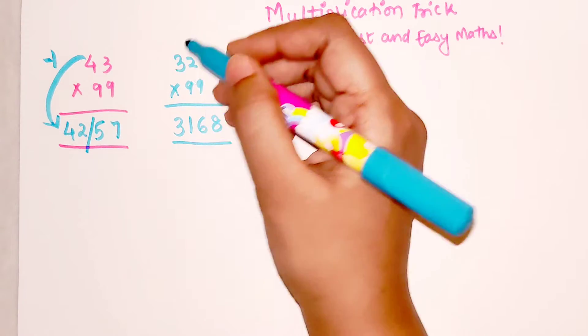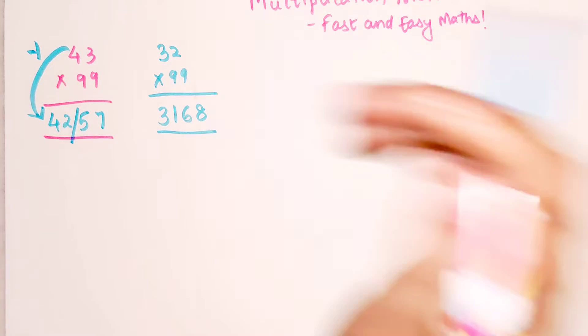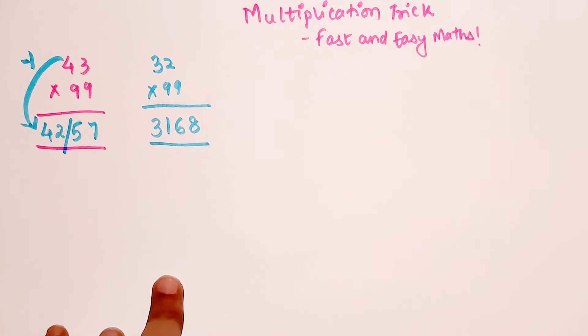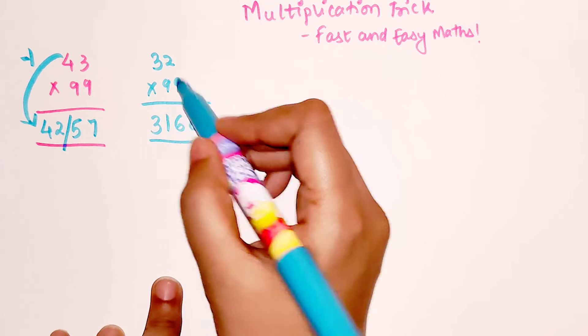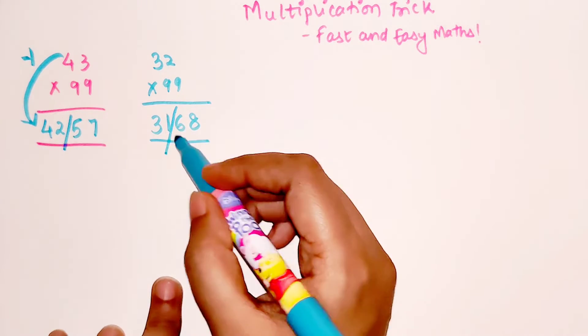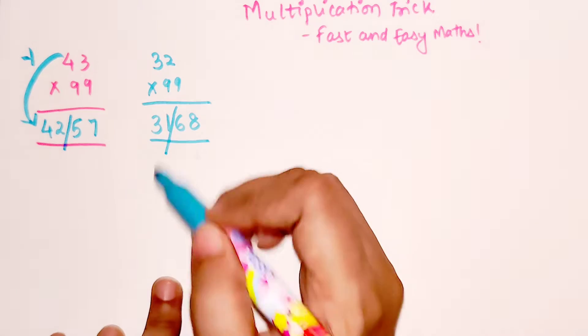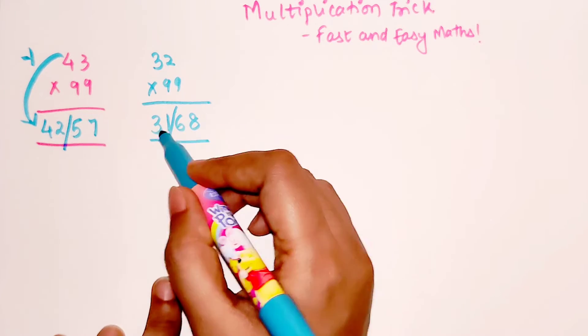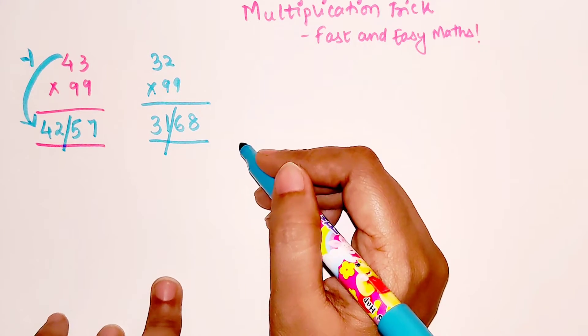Similarly, this one is, the first part is 32 minus 1 that gets you 31. And then you should add 6 to 3 to get 9, and I will add 8 to 1 to get 9.